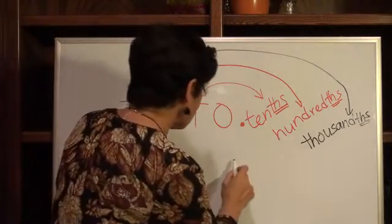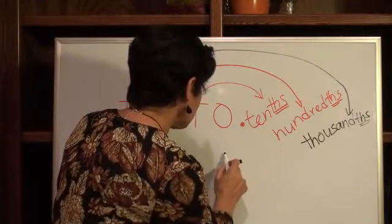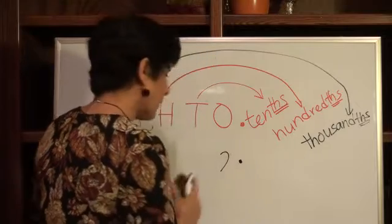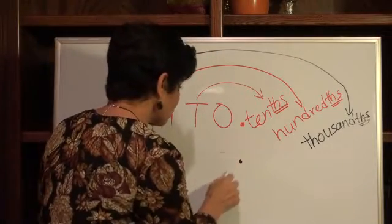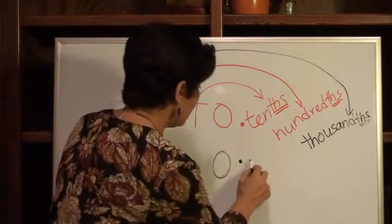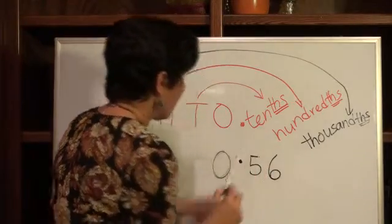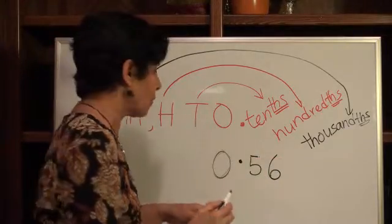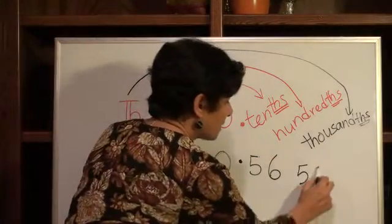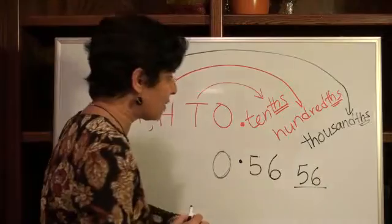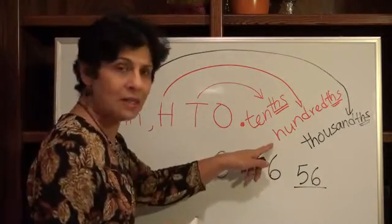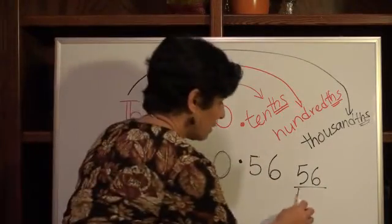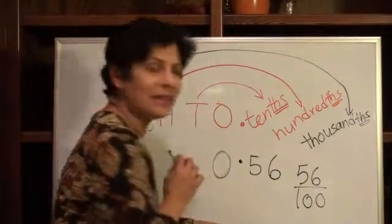What about hundredths? Same thing here. Suppose it was [0.56]. So, this is fifty-six hundredths. So as a fraction, what we're going to write is fifty-six. And what's the denominator going to be? Because it's the hundredths, you want to write hundred. One hundred. And that's it.